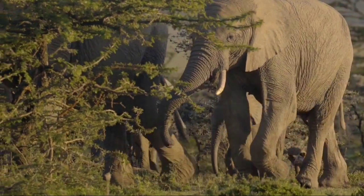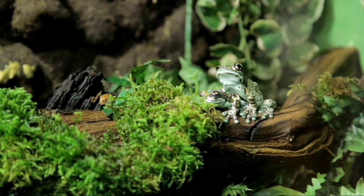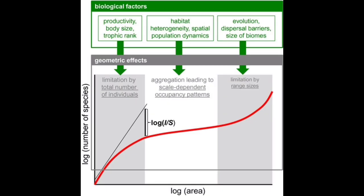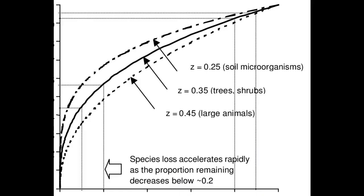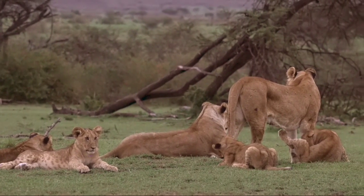It is believed that, in spite of being the region with the highest biodiversity, many species in the Amazon are yet to be discovered and identified. The second pattern of biodiversity is the species-area relationship, or species-area curve, which describes the relationship between the area of a habitat and the number of species found within that area.